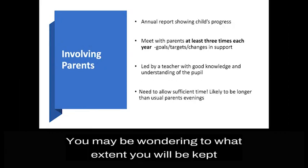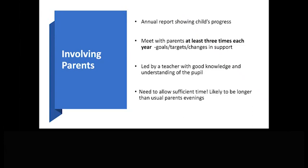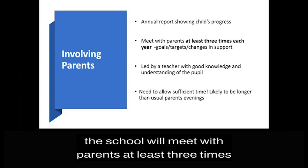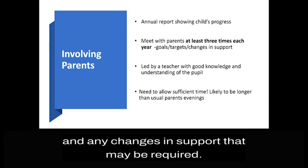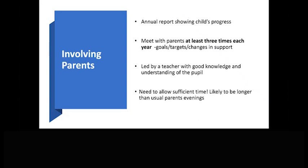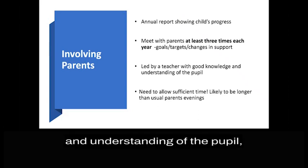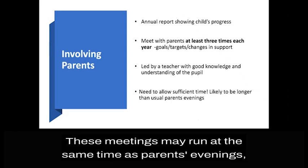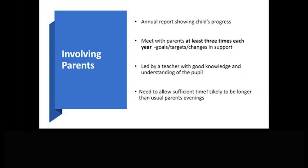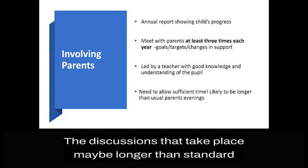You may be wondering to what extent you will be kept informed about what is happening. All children will have an annual report, and this should explain the progress that has been made. If your child is receiving SEND support, the school will meet with parents at least three times each year, and this meeting will be to discuss the goals or targets and any changes in support that may be required. These meetings should be led by a teacher with good knowledge and understanding of the pupil — most likely your class teacher — together with the SENCO. These meetings may run at the same time as parents evenings, but it's very important that there is enough time, as the discussions that take place may be longer than standard parents evenings.